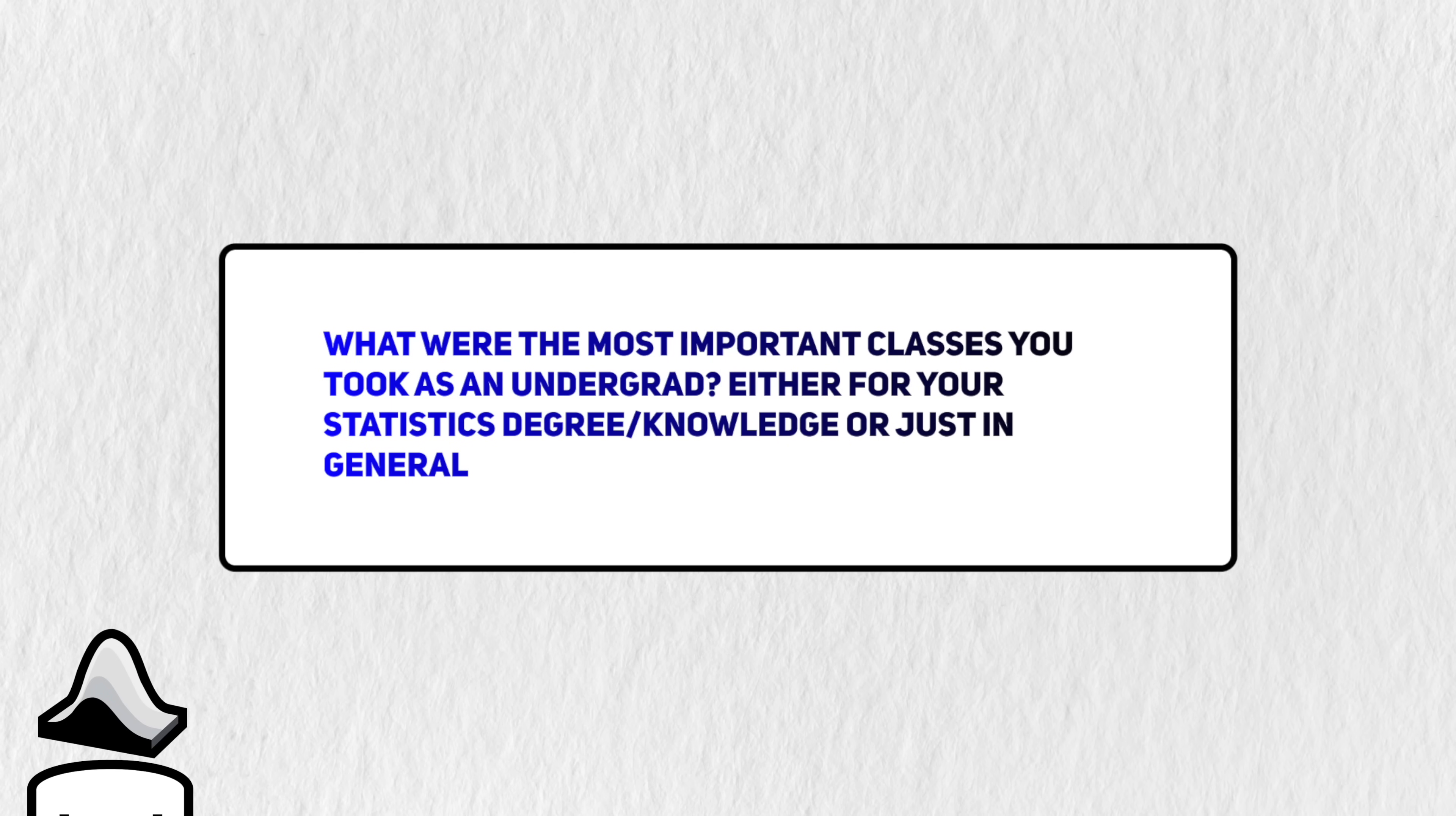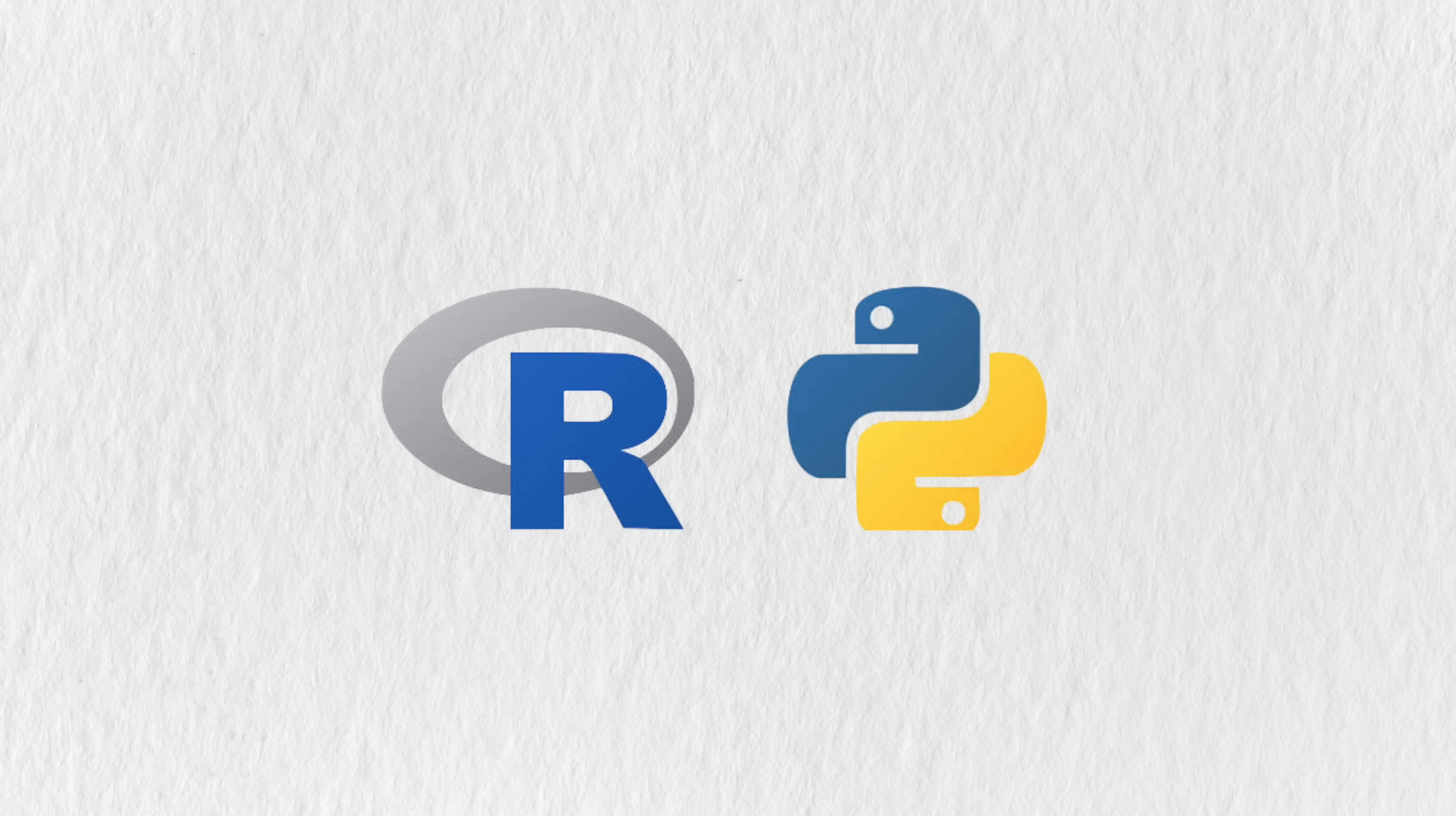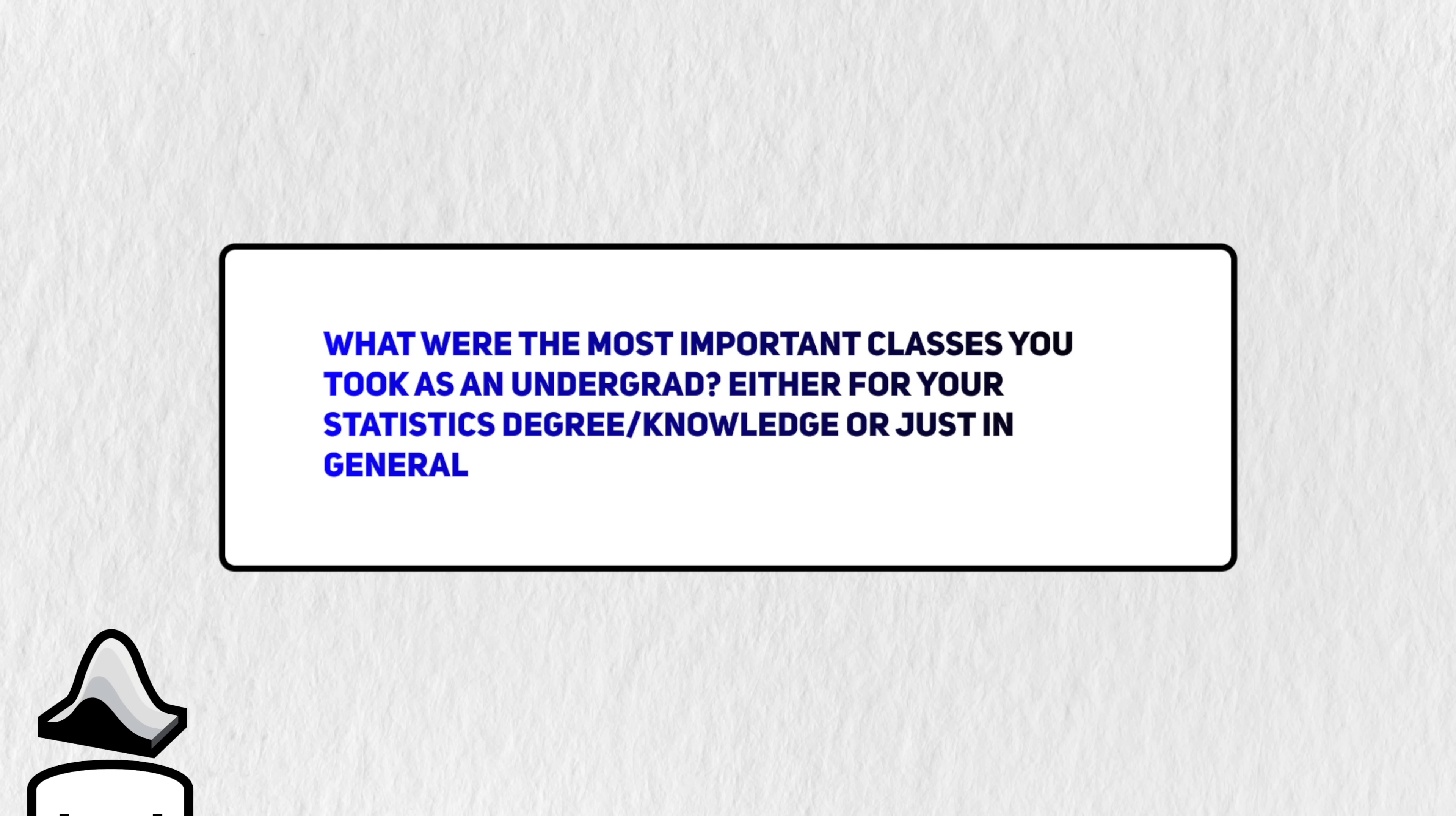What were the most important classes you took as an undergrad? Either for your statistics degree, or just in general. You might not be expecting this, but it was definitely my first programming class. My first programming language was not R or Python, but MATLAB. This was the language of choice for engineering majors at my college. Doing statistics means doing a lot of programming, so having a solid foundation in that will have lots of downstream benefits when you're learning. I successfully used programming to help myself learn a lot of difficult concepts in statistics because I could see them in action through simulation studies.